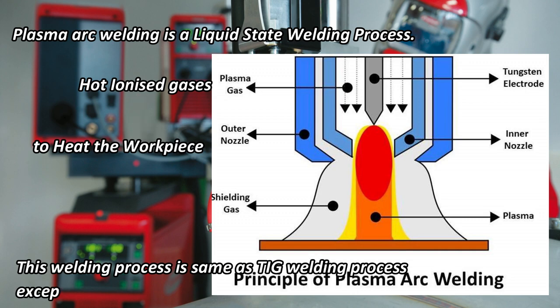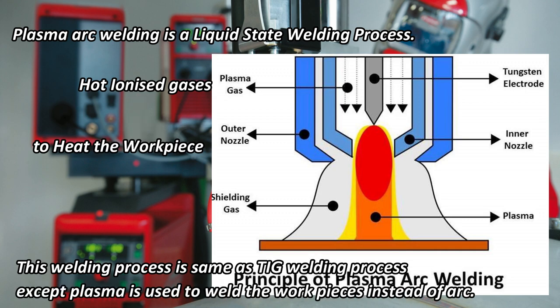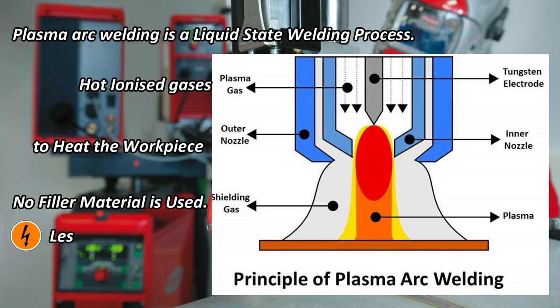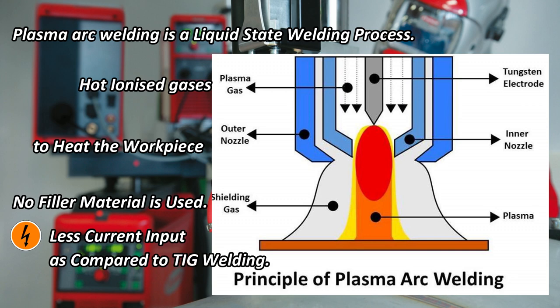This welding process is same as TIG welding process except plasma is used to weld the work pieces instead of the arc. Filler material may or may not be used in this type of welding. One big advantage of plasma arc welding is that it uses less current input compared to TIG or MIG processes to produce the same heat.